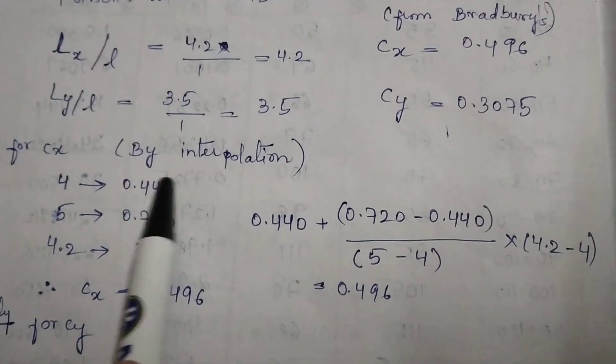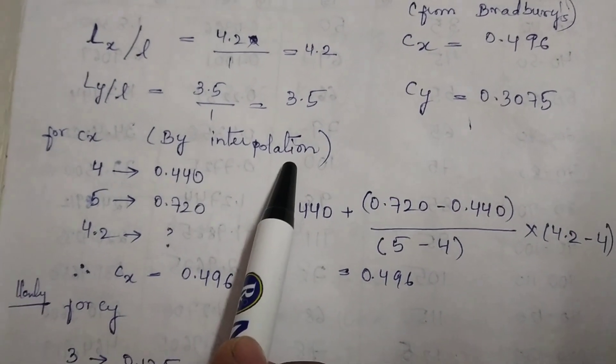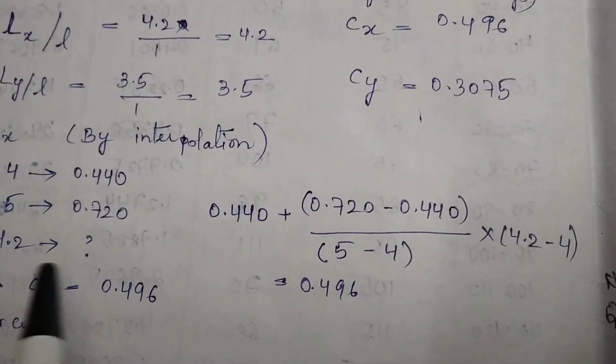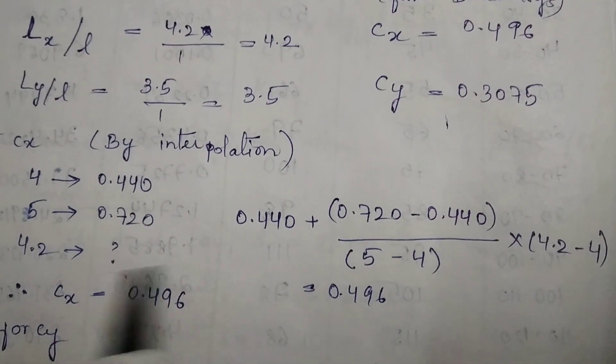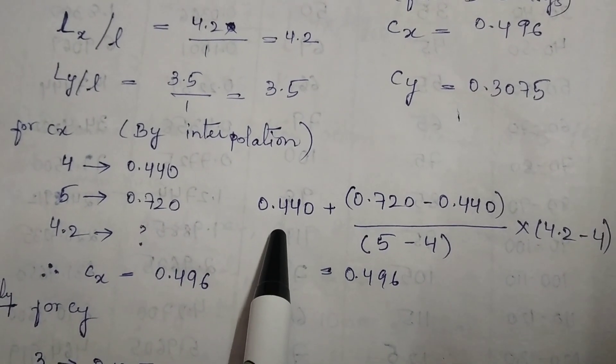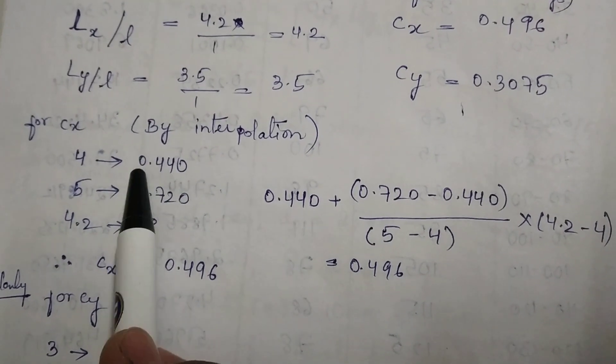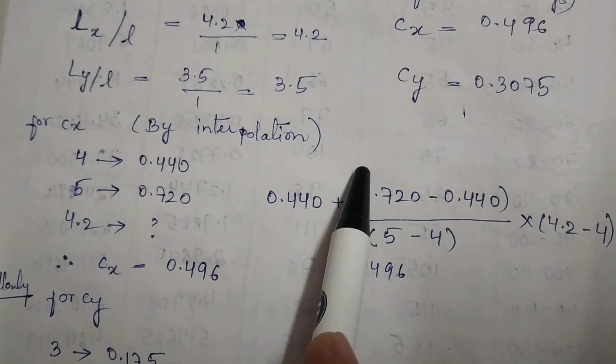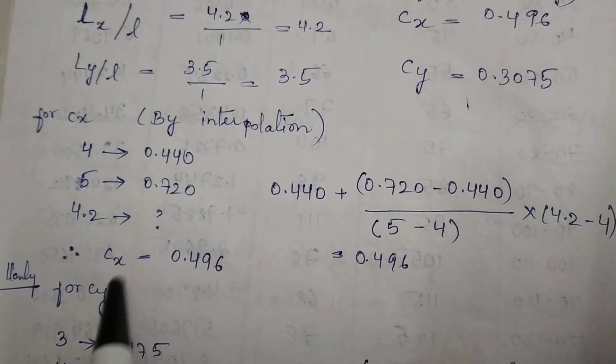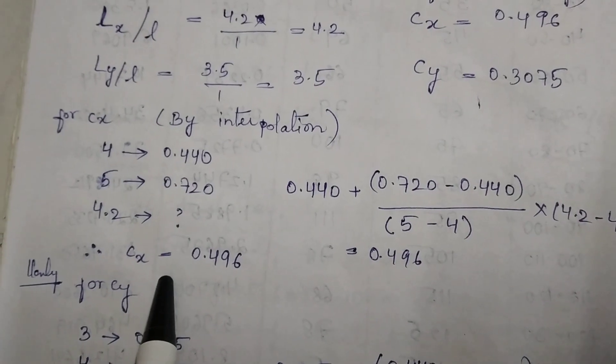The interpolation method is straightforward - a technique you learned in school. By substituting these values into the interpolation formula, we obtain the value for Cx at 4.2.